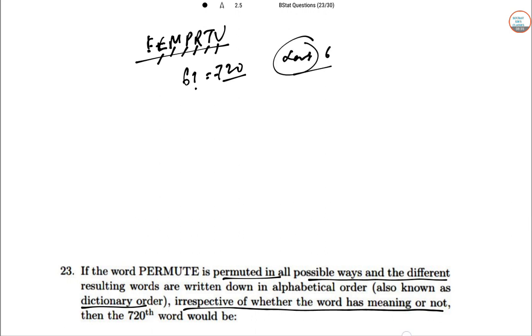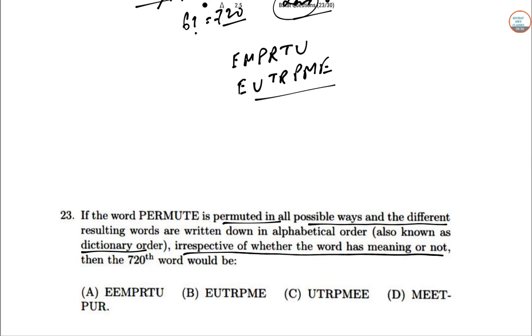Then the 720th word is definitely the last of the given dictionary meaning of the permutations, which has to be E, U, T, R, P, M, E. Seeing the options, we can say that option B is correct.